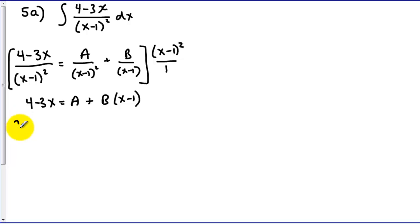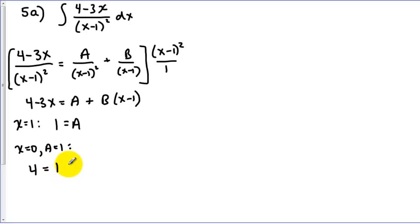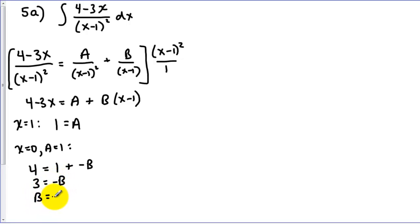So if we pick x equals 1, that will get rid of the B. We've got 4 minus 3 is 1, equals A, and that's 0. So we've got A equals 1. Now to find B, we need to pick some other value of x, as well as substituting in the value we just found for A. I'm going to pick x equals 0, so we get 4 here. Putting 1 in for A, and 0 in for x gives us negative B. So subtracting the 1, we get 3 equals negative B, or B equals negative 3.